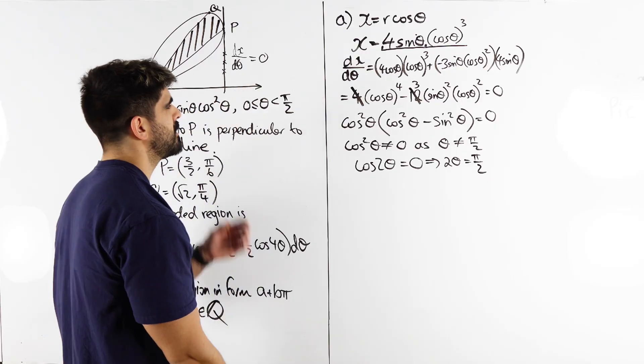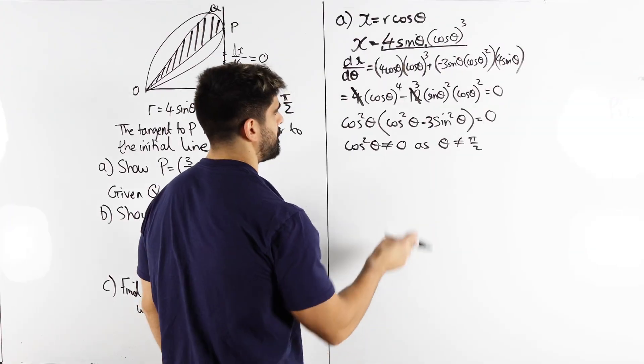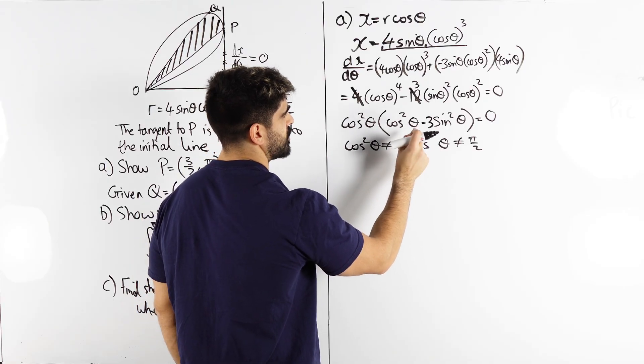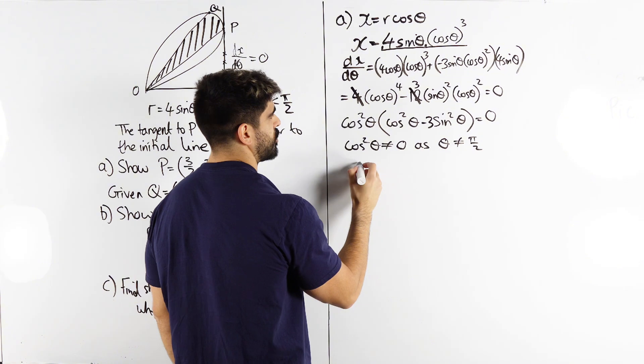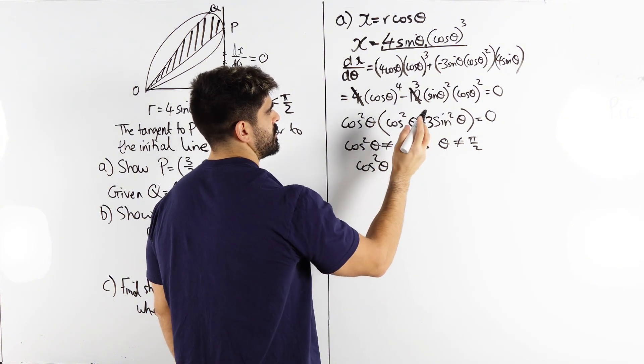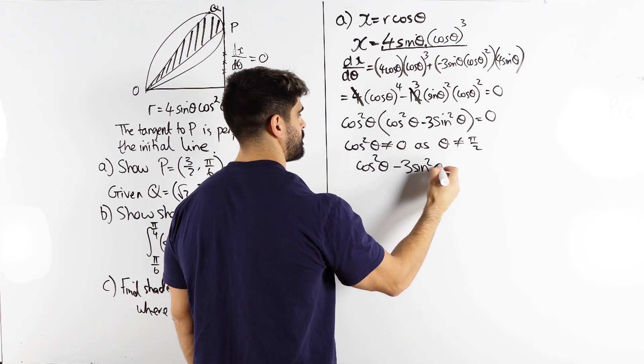And then am I missing? Oh I missed the three. This is why I'm bugging out. So after all that yap I couldn't even convert it to cos two theta. So here I get cos squared theta minus three sine squared theta is zero.